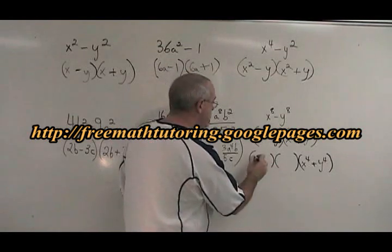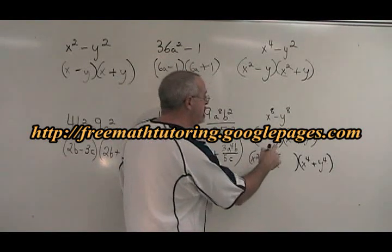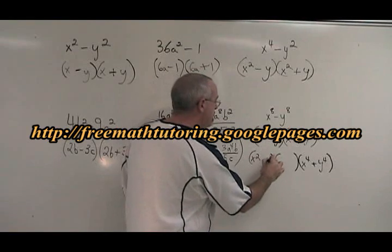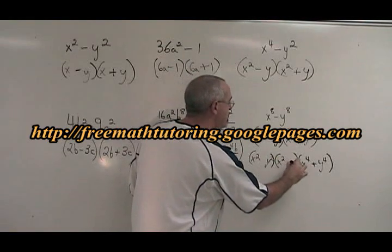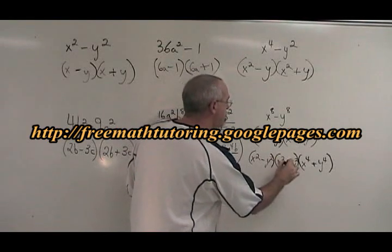The x to the 4 plus y to the 4 has to be carried down into our answer. Square root of x to the 4 is x squared. Square root of y to the 4 is y squared. So you put x squared and y squared in these positions. One minus, one plus.